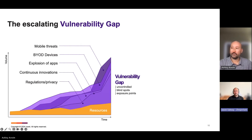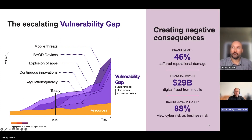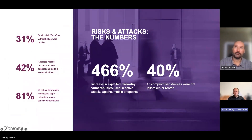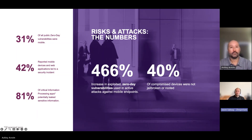This summarizes what we're seeing: there's a growing vulnerability gap for mobile as a whole. We're seeing mobile threats, an explosion of apps, rising BYOD device usage, and continuous innovation pushing people to mobile. The problem is IT operations, security, and incident response teams aren't being given more resources to deal with this vulnerability gap — resulting in a huge explosion of mobile fraud and reputational damage. Zimperium's own data — not crowdsourced — shows a 466% increase in zero-day vulnerabilities on mobile last year.